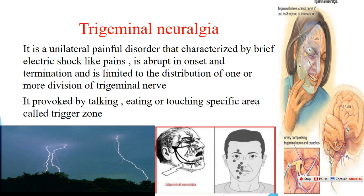The three divisions are the ophthalmic division, maxillary division, and mandibular division. Trigeminal neuralgia rarely affects the ophthalmic division; it most commonly affects the maxillary division and then the mandibular division. The pain is triggered by talking, eating, or touching a specific area called the trigger zone along the course of the nerve, causing severe shooting pain.